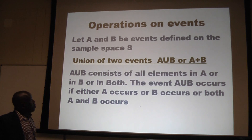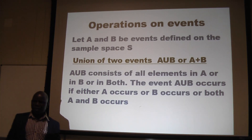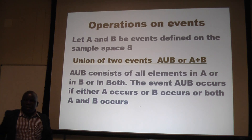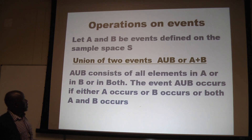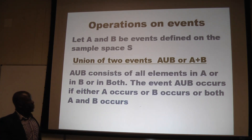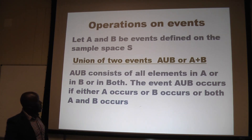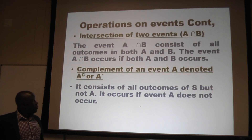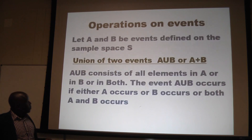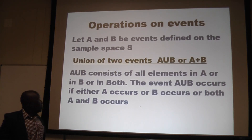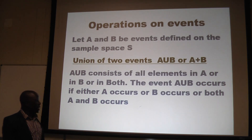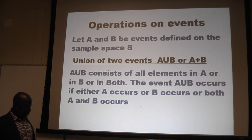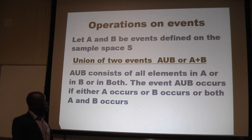Now let us look at operations on events. Suppose we have two events A and B within a sample space S. The union of two events, written A union B or simply A plus B, consists of all elements in A, or in B, or in both. In other words, event A union B occurs if either event A occurs, event B occurs, or both A and B occur.